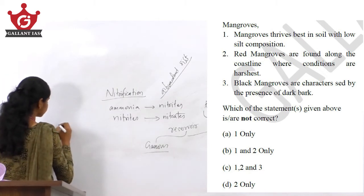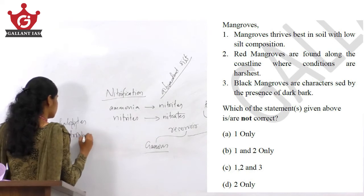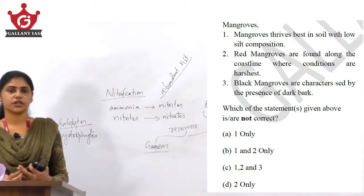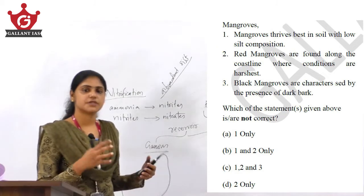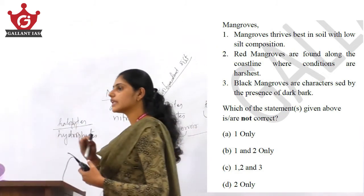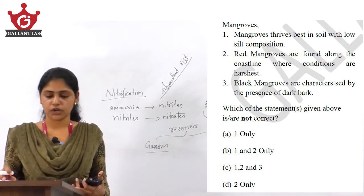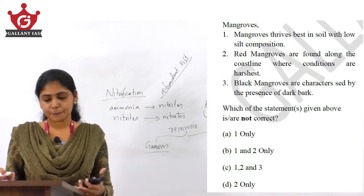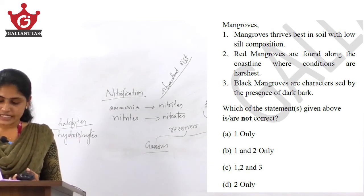In mangroves, the main types of plants are halophytes as well as hydrophytes. Halophytes are adapted to live in salty conditions — they are salt-tolerant plants. Hydrophytes are adapted to live in waterlogging conditions. So the first statement is wrong; mangroves thrive best in soil with high silt composition.